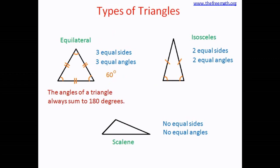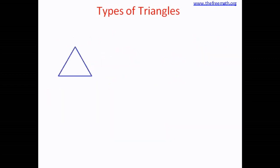There are other types of triangles as well. Look at this triangle — you can see that all the angles of this triangle are acute. Acute means they are less than 90 degrees. Such kind of triangle is called an acute triangle.